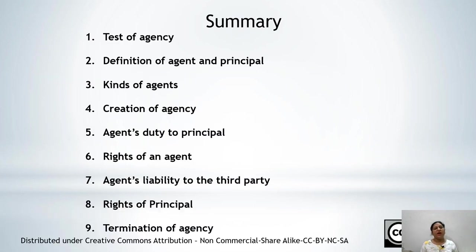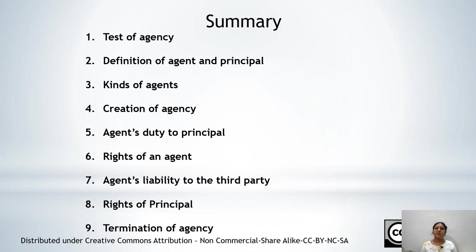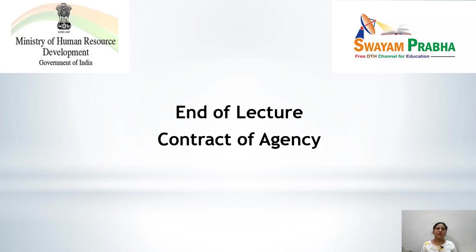In this chapter we have covered the meaning of agency, how the agency is tested, the definition of agent and principal, the various kinds of agents, how the creation of agency is done — by express agreement, by implication, and by ratification — the agent's duties to the principal and to third parties, the rights of an agent against the principal and third parties, the rights of the principal, and finally the various modes through which an agency comes to an end. This is the end of the lecture on Contract of Agency. Thank you.